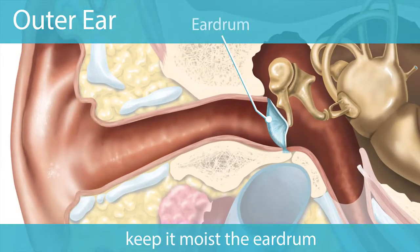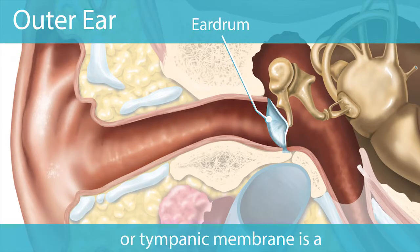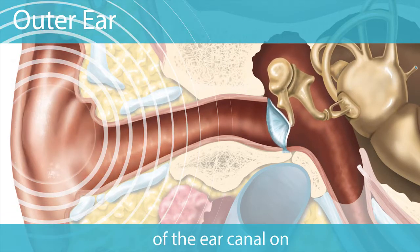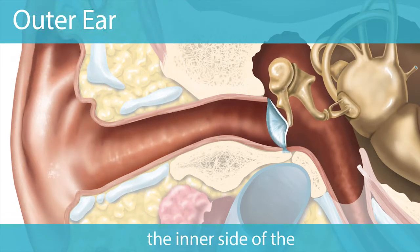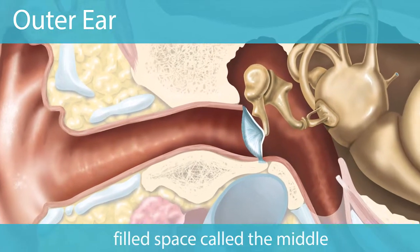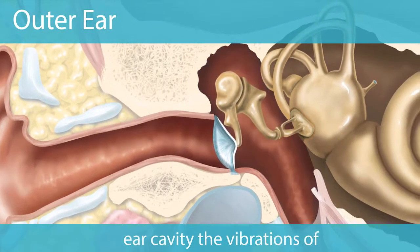The eardrum or tympanic membrane is a membrane at the inner end of the ear canal. On the inner side of the tympanic membrane is an air-filled space called the middle ear cavity.